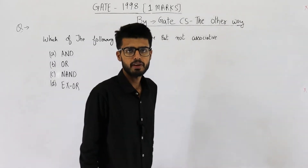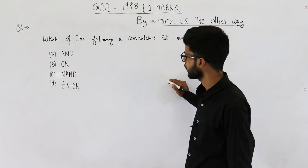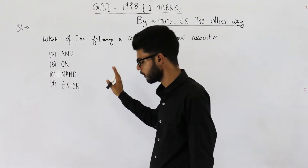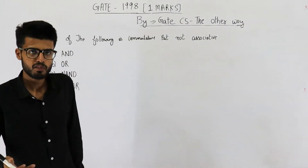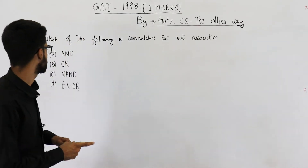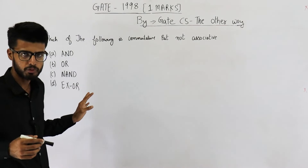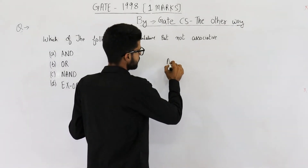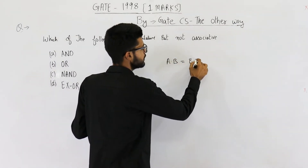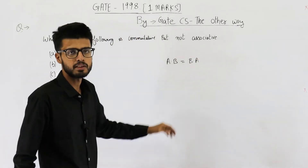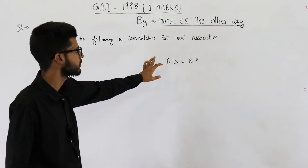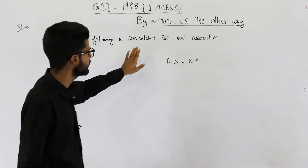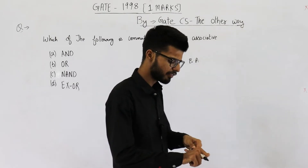This question is from the GATE 1998 exam. It asks which of the following is commutative but not associative. All logic gates are commutative, meaning the order of providing input does not matter. For example, option A is AND — it's commutative. All of them are commutative. Commutative means A dot B is the same as B dot A. If you just flip the inputs, the result is the same. In the case of AND, and in fact for all the given options, it's going to be the same.